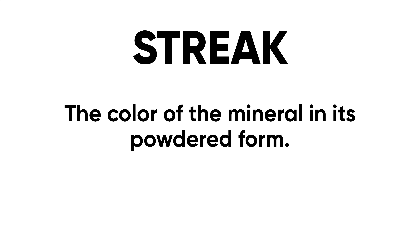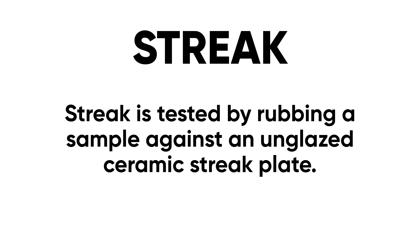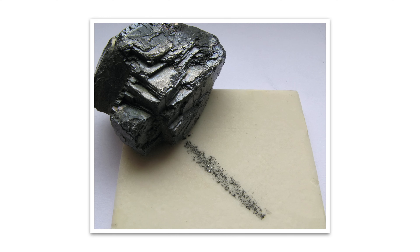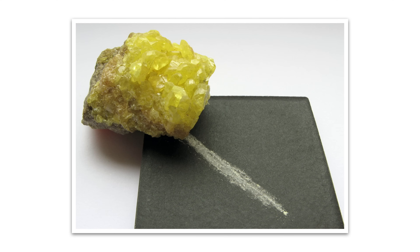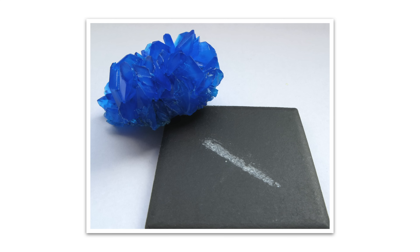Another characteristic we can use is called streak — the color of the mineral in its powdered form. The way we test it is by rubbing the sample against an unglazed ceramic streak plate. These look like little tiles that come in black and white. Rubbing the mineral on the streak plate breaks off a little bit of the mineral in its powdered form so you can identify the color as a powder. The color may differ from what you'd expect: Galena looks metallic silver when whole but gives a blackish streak; sulfur gives a yellowish-white streak; azurite gives a bluish streak; and chalcanthite gives almost a white streak even though the mineral itself appears blue.